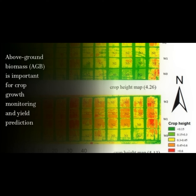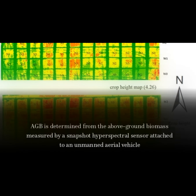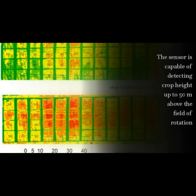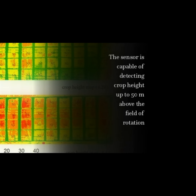Above-ground biomass (AGB) is important for crop growth monitoring and yield prediction. AGB is determined from measurements taken by a snapshot hyperspectral sensor attached to an unmanned aerial vehicle. The sensor is capable of detecting crop height up to 50 meters above the field of rotation.